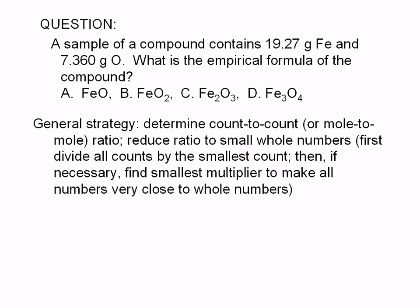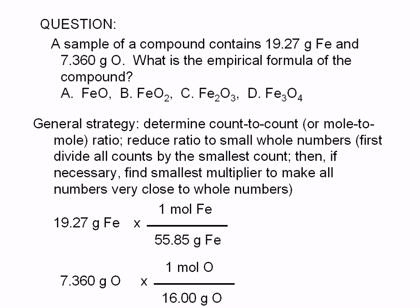Since we're given masses in this question, the first thing we need to do is convert them to moles. By now you should know how to do this. Here's a quick review. We start with known masses of iron and oxygen, then multiply by a conversion factor based on molar mass. 55.85 grams per mole is the molar mass of iron and 16.00 grams per mole is the molar mass of oxygen. These calculations give us 0.3450 moles of iron and 0.4600 moles of oxygen.